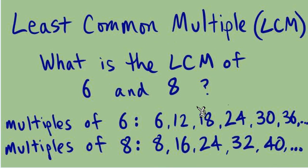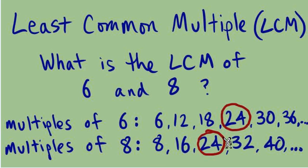A common multiple is a number that we see on both lists. You may already be spotting that we have a 24 on both lists, so 24 is a common multiple — it's common to both lists. And it's also the least common multiple, because there are no numbers less than 24 that appear on both lists. So here's one way to find a least common multiple.